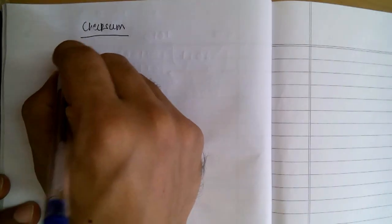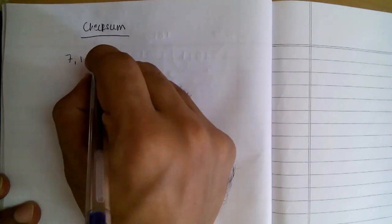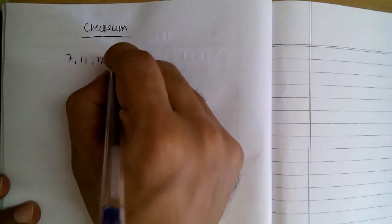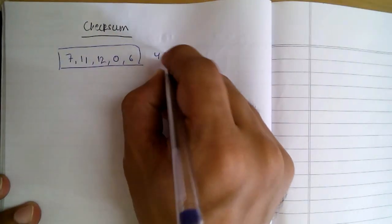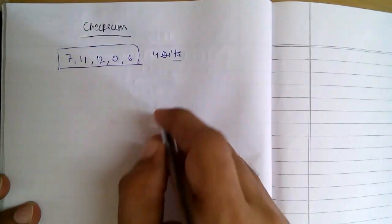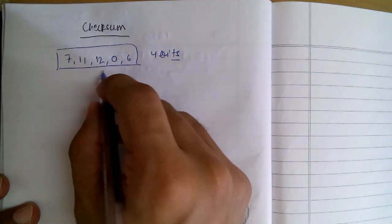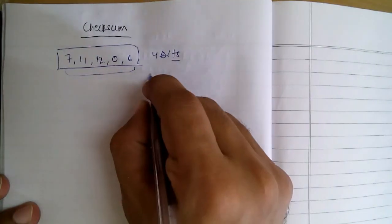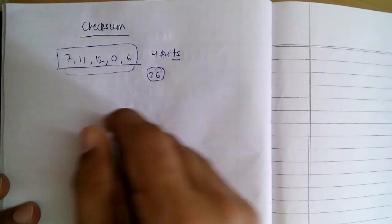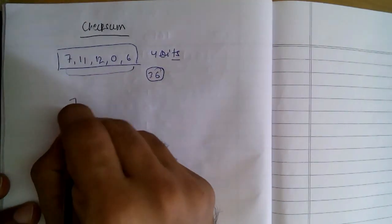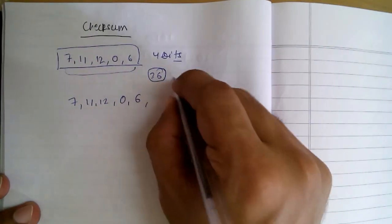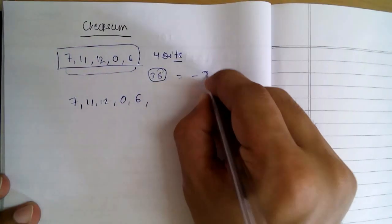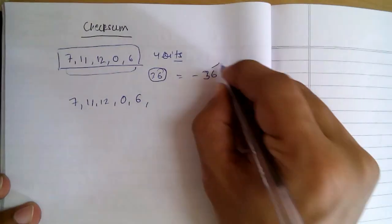Let's say we have our data - 4-bit data words like 7, 12, 0, and 6. These can be represented in 4 bits. Now we will sum it all and the sum is 36. What the sender does, he sends the data along with the negative of this, that is minus 36. This is known as Checksum.